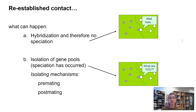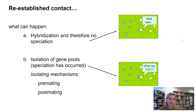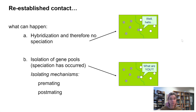Post-mating isolation refers to an incompatibility between sperm and egg — they can fertilize, but the zygote doesn't develop properly, and the hybrid offspring isn't viable. Maybe an embryo can form but has reduced viability, or perhaps the offspring forms and is fine but sterile. For example, mules — a cross between a female horse and a male donkey. The animal itself is fine, but it can't reproduce. That's a form of post-mating isolation.